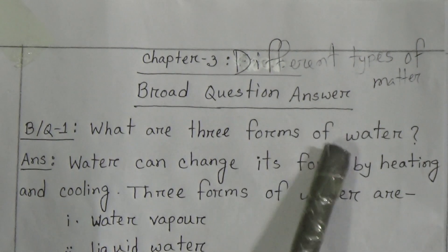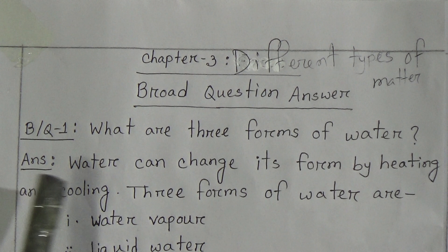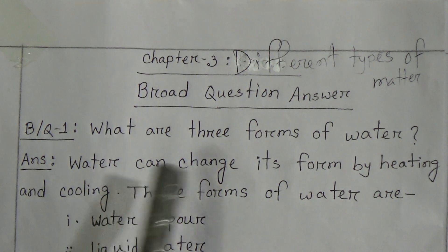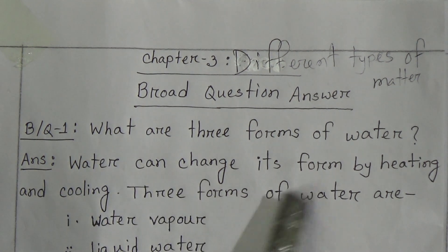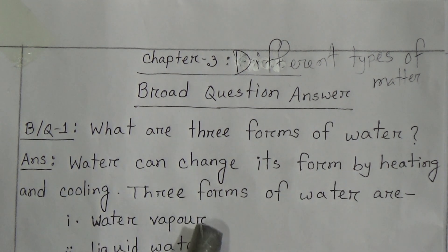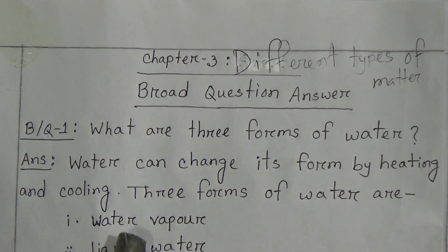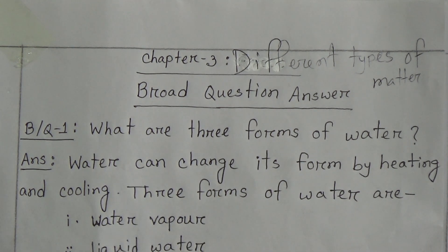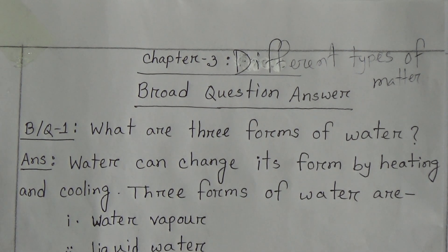Chapter Three: Different Types of Matter. Broad question number one — what are the three forms of water? Water can change its form by heating and cooling. The three forms of water are water vapor, liquid water, and ice.